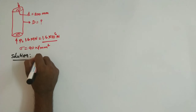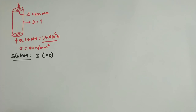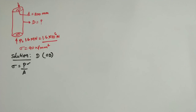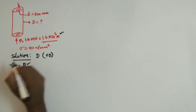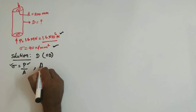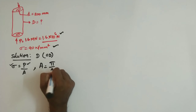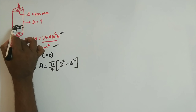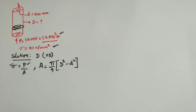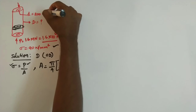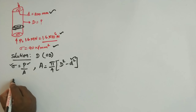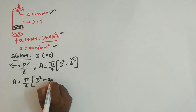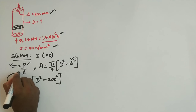We need to find capital D, the outside diameter. We know that stress equals load divided by area. The cross-sectional area of a hollow section is pi by 4 times (capital D squared minus small d squared), where small d is 200 mm.